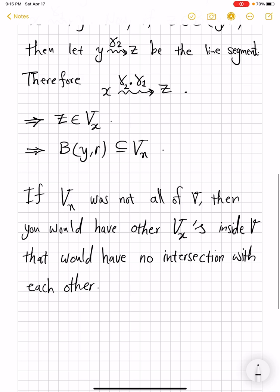Here's what we mean. If x prime is not in Vₓ, then Vₓ′ intersection with Vₓ would be empty.